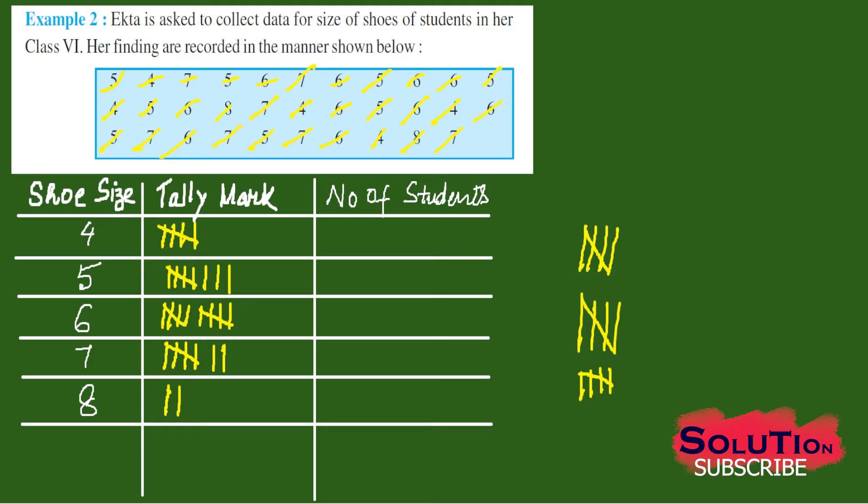So after cutting all those numbers here and marking it under the tally mark, things will be like this. Now let me count the marks here and write the total number of students. So here we have 4. For 4 we have 1, 2, 3, 4, 5. So number of students is 5. So there are 5 students whose size of the shoe is 4. For size 5 we have 5 and 3 more, so 8 students are there.